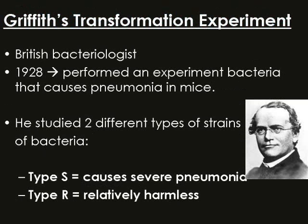Griffith was a British bacteriologist. In 1928, he was studying pneumonia in mice. He found out there were two types of pneumonia: type S, which causes severe pneumonia, and type R, which was relatively harmless.